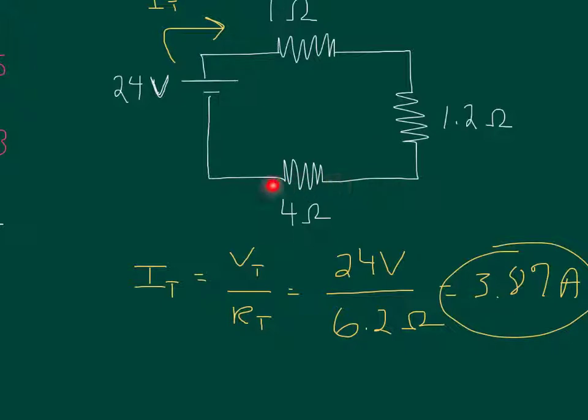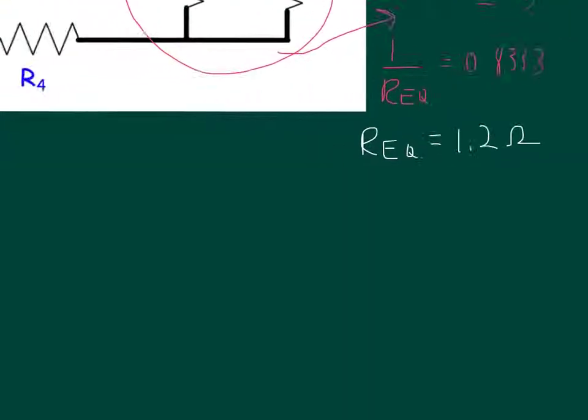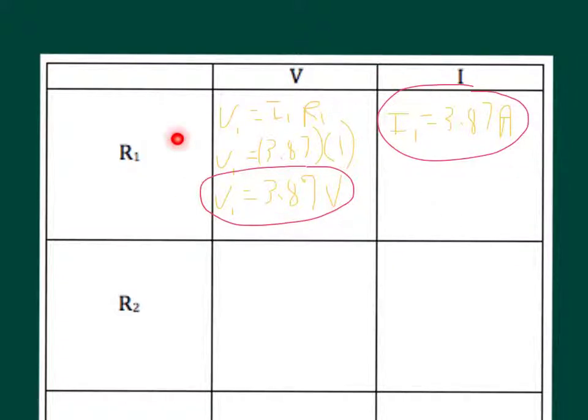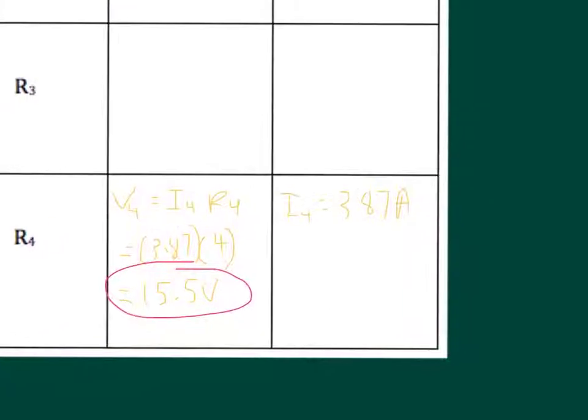We know that 3.87 amps has to go through this last resistor, this 4 ohm resistor. This 4 ohm resistor was R4, so we know that I4 is 3.87 amps. We can solve for V4. V4 is I4 times R4, which would be 3.87 amps and the resistor was 4 ohms. If we multiply that together, 15.48, which we can round to 15.5 volts. We now have all of this information. We know everything about resistor 1 and resistor 4.